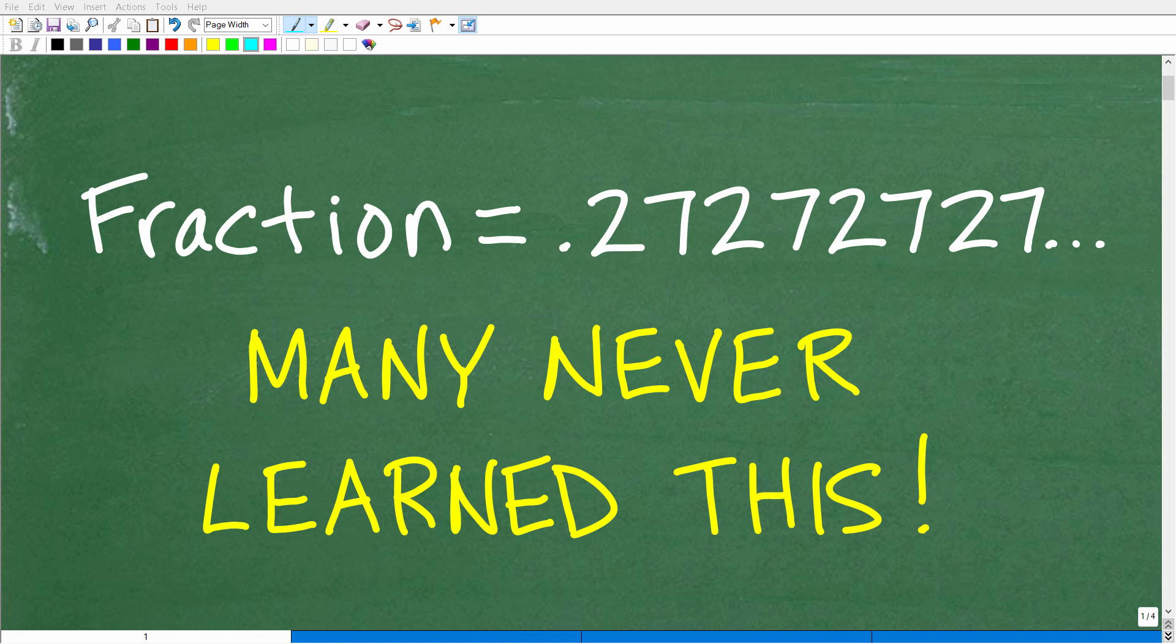Okay, so let's see if you can solve this very interesting problem about fractions and decimals. The question is: what fraction is equivalent to this decimal right here? The decimal is 0.27272727.